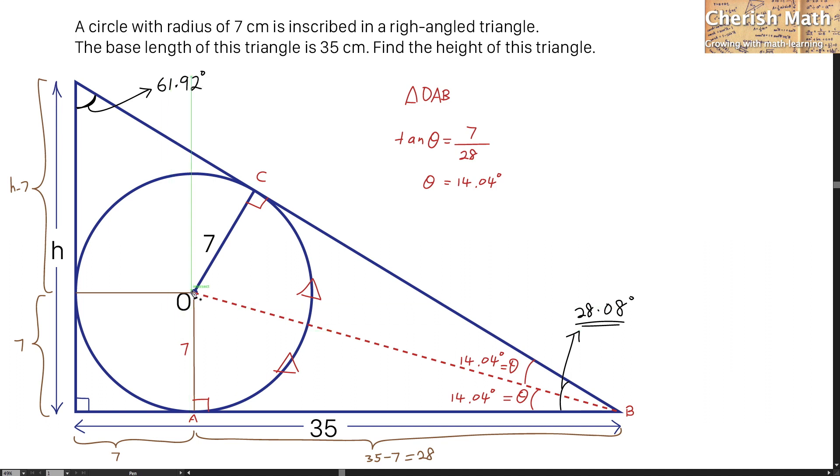By making a line from the center of the circle to the top corner of the triangle, this is producing another two congruent triangles that I'm labeling with green color. The angle for this part is by using this angle, 61.92 degrees, and slash it into half. This produces 30.96 degrees.